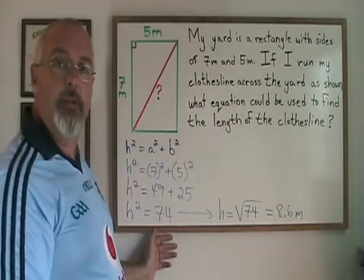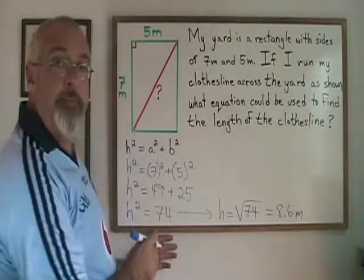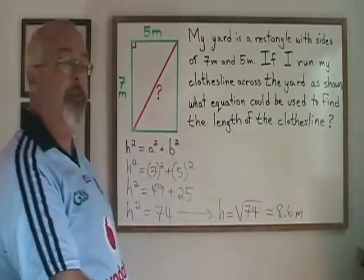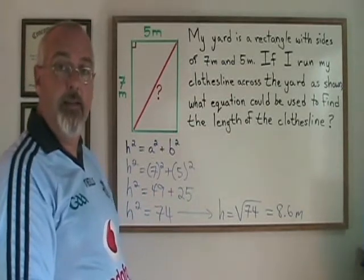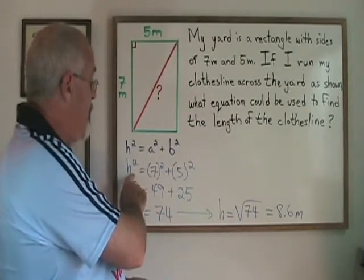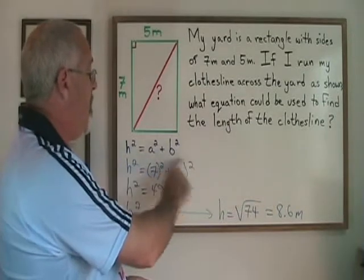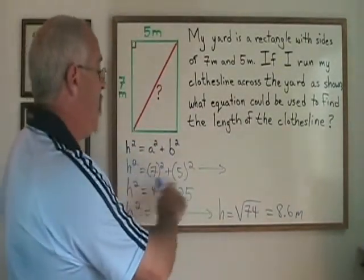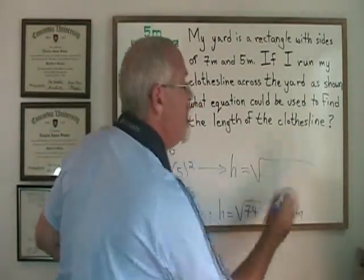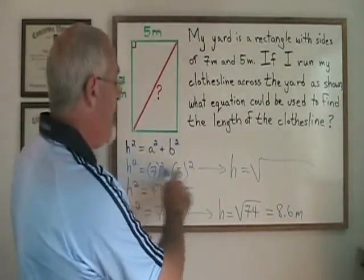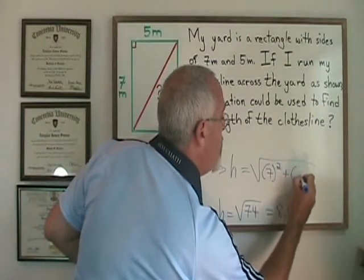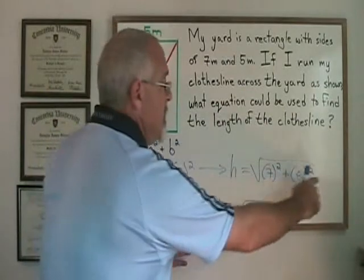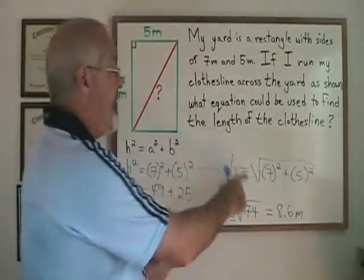I have not simplified these numbers — I have just plugged them into the equation, and if I were to continue on I would get the right answer. The only problem with this as a final answer is that I am being asked for the equation that could be used to find the length of the clothesline, h — the hypotenuse — not an expression that finds h squared. So I have to make this equation have h, not h squared. If h squared equals this expression, then h must equal the square root of that expression. So if I write h equals the square root of 7 squared plus 5 squared inside the radical, I have not simplified or calculated, but I have isolated h. If I were to solve this expression, I would find the length of the clothesline. So this is the right answer.